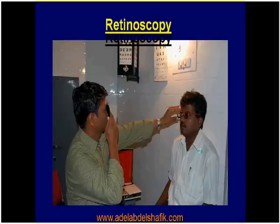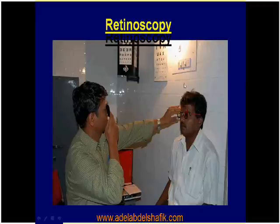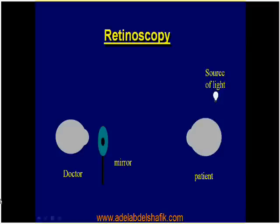The observer sits in front of the patient with an average distance of one meter in between, and the head of the observer should be at the same level as the head of the patient. Either the doctor uses a streak retinoscope, or he can use a plain mirror. The observer holds the mirror with a distance of one meter.